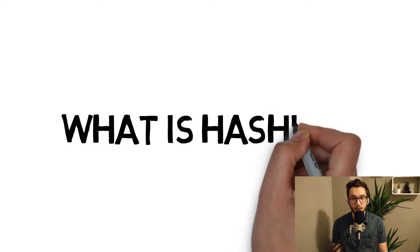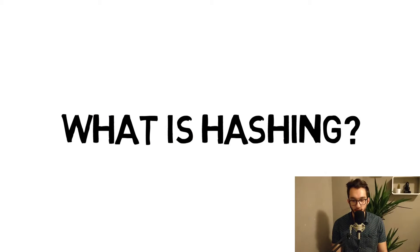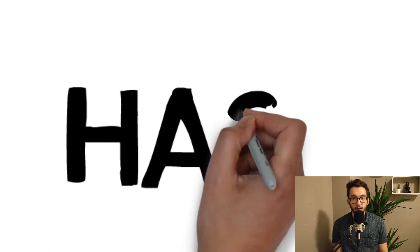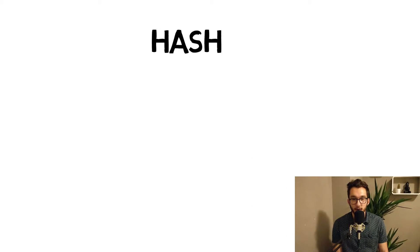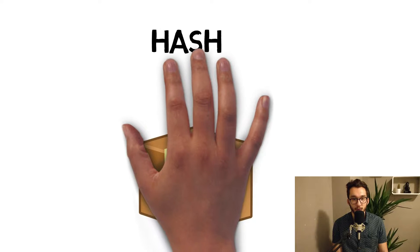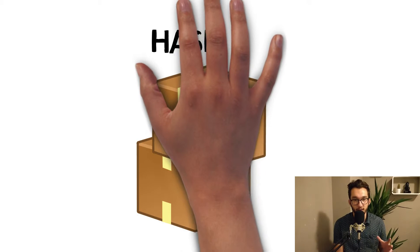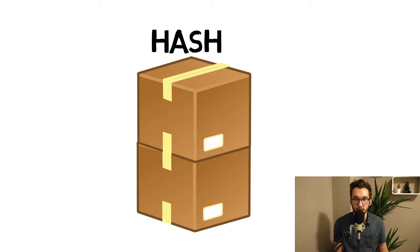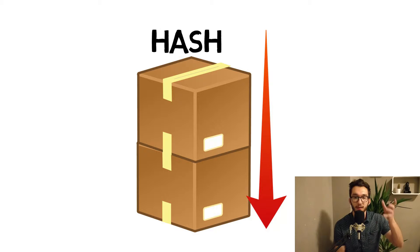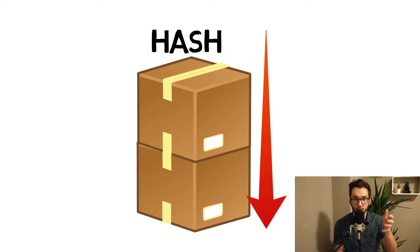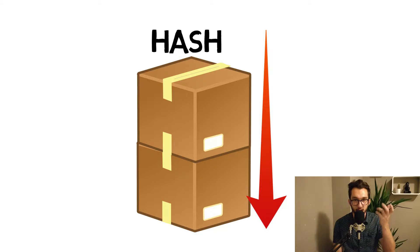Let's talk about hashing. Going back to our example about the blockchain warehouse: if you have a box, the box has some weight, and the weight is actually the hash. If we stack multiple boxes on top of each other, all of them have a separate weight, a separate hash. If you remove one box in between, then all the others on top will collapse.